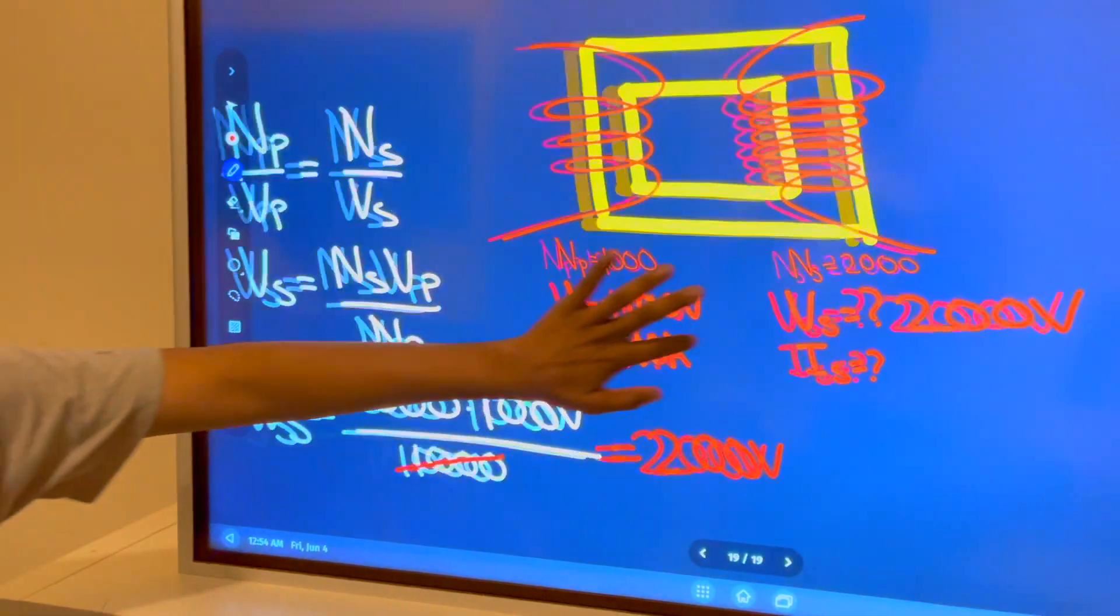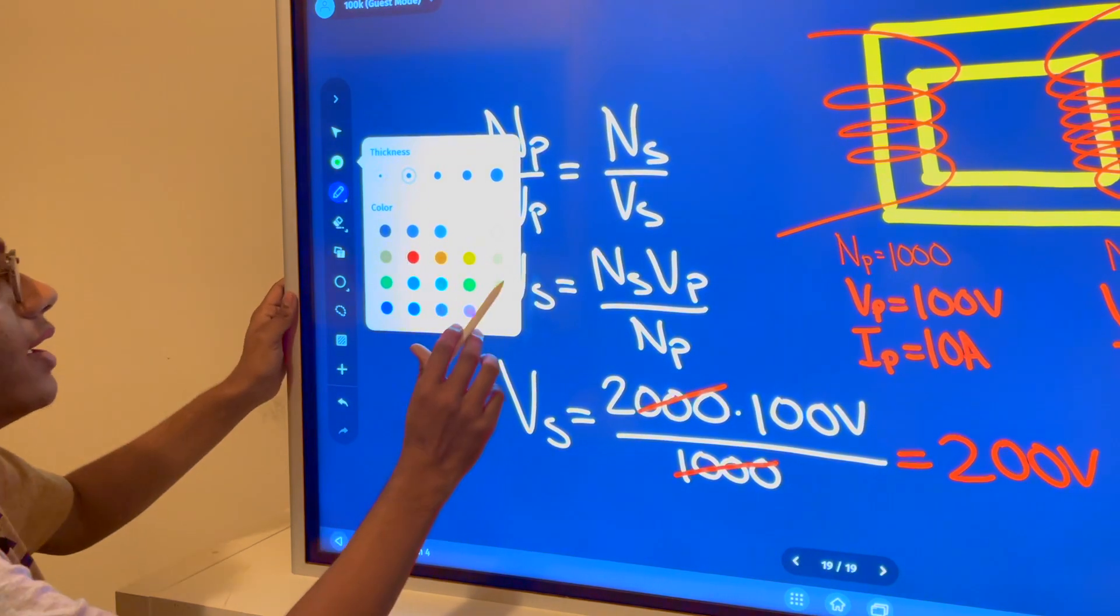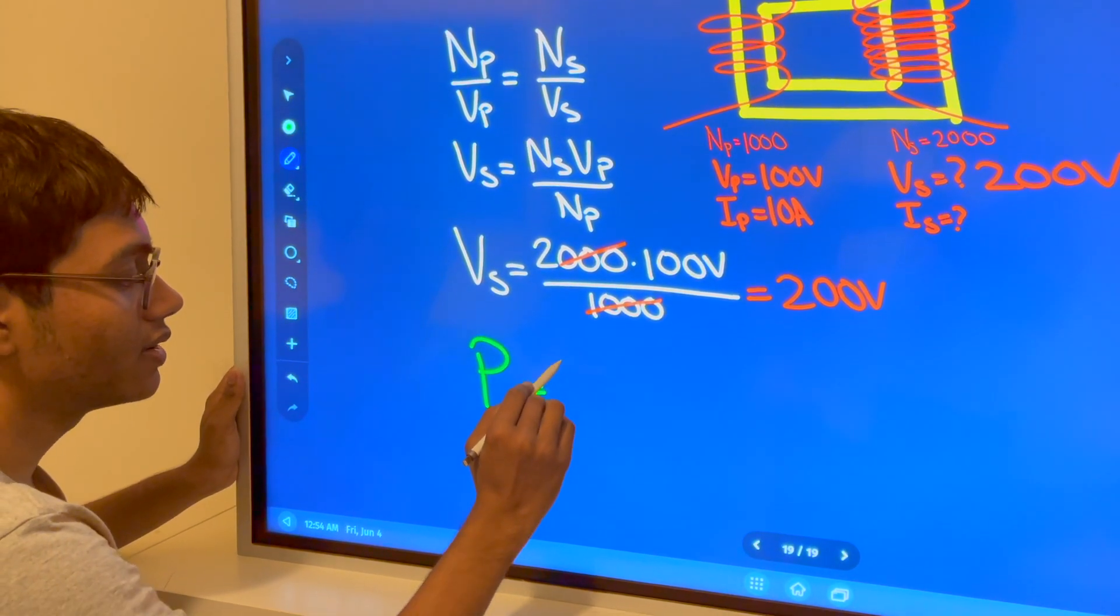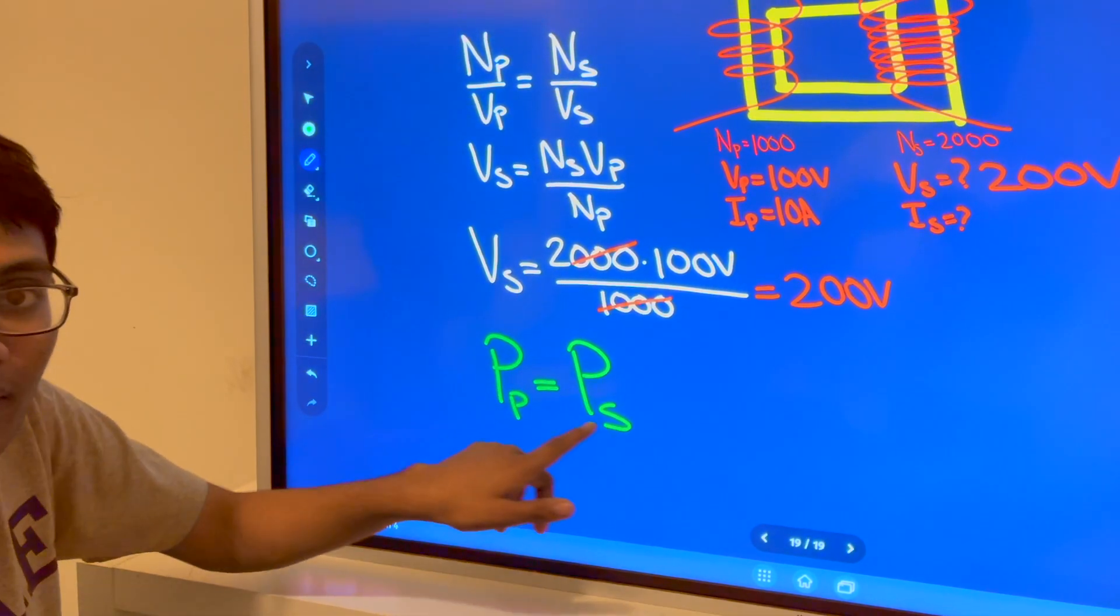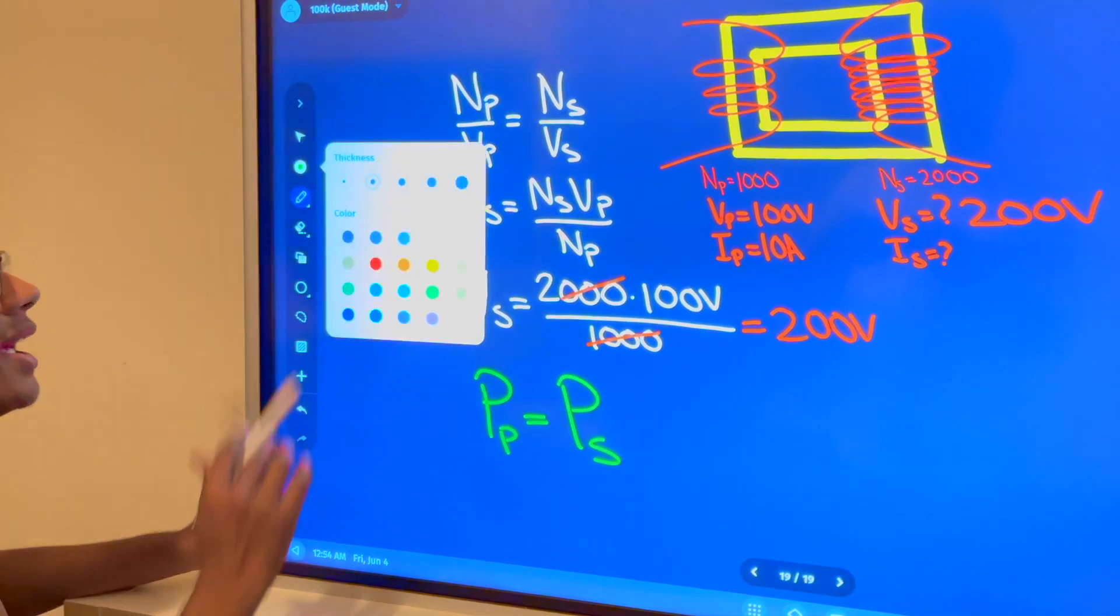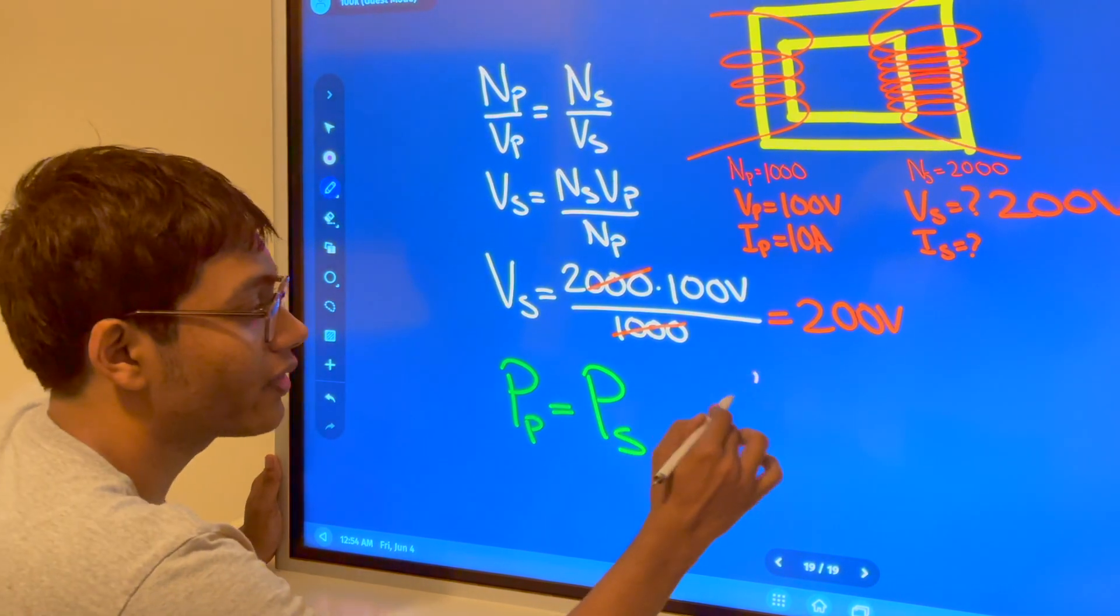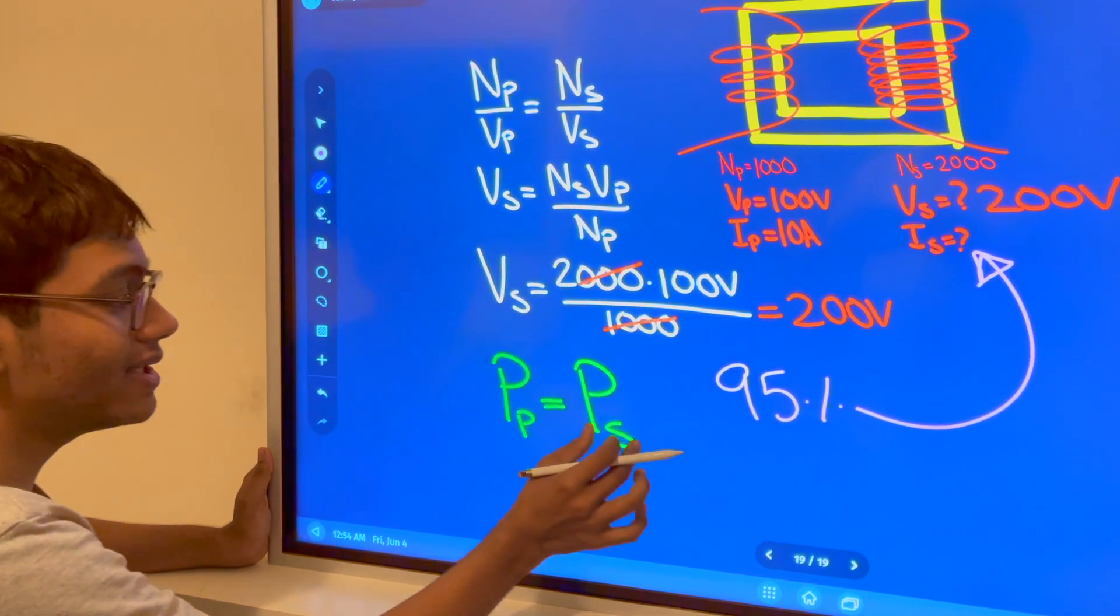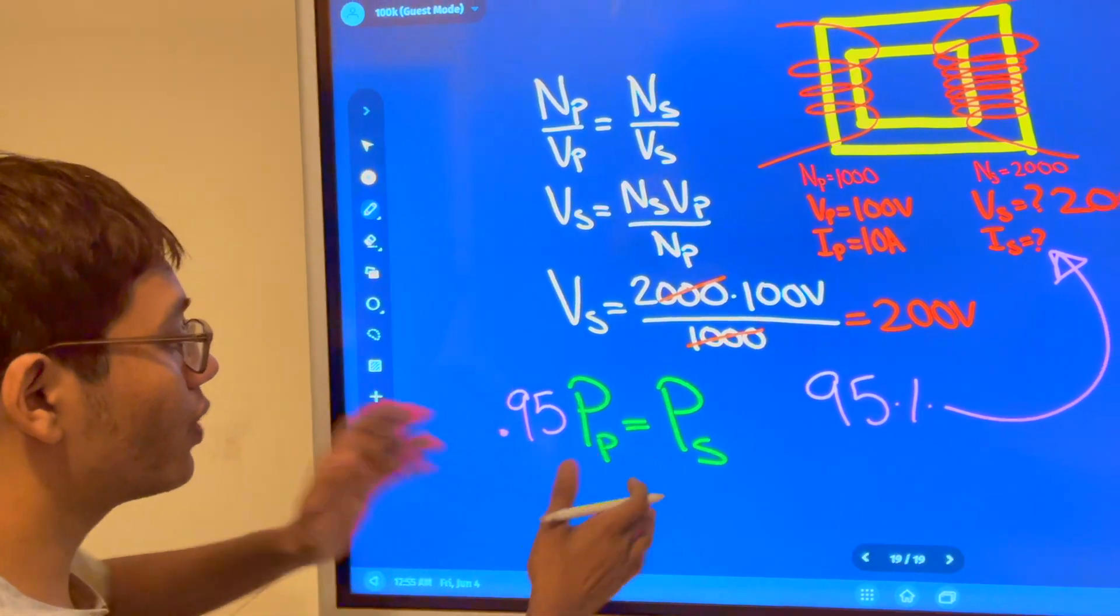So we figured out the secondary voltage is 200 volts. Now let's find the secondary current. I can use the power formula to my advantage. Power equals power - the primary power equals the secondary power, but that's only if your transformer is 100% efficient. Transformers are never 100% efficient because you always have some energy loss. Transformers are maybe 95% efficient. So we'll say this transformer is 95% efficient, which means the secondary power is only 95% of what the primary power was.